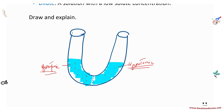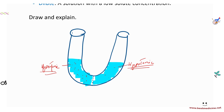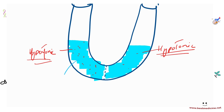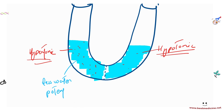On the right side there is less concentration. When we compare water content to solute content, the left side has less water relative to solute while the right side has more water relative to solute. This difference in water concentration is defined by a term called water potential. The left side has less water potential, the right has higher water potential.